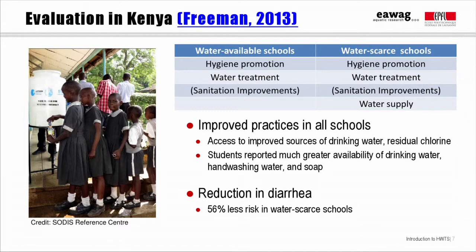One of the most rigorous evaluations of WASH in schools to date was done by Matt Freeman at Emory University. He and his co-authors did a randomized trial in 185 primary schools in western Kenya. All schools except controls were provided with hygiene promotion and an HWTS system consisting of safe water storage containers and a year's supply of WaterGuard liquid chlorine solution. Half of the schools were also provided with additional latrines. Schools without a year-round water source within one kilometer or an improved source within two kilometers were considered water scarce and received a new water supply facility — either a borehole or a rainwater harvesting tank.